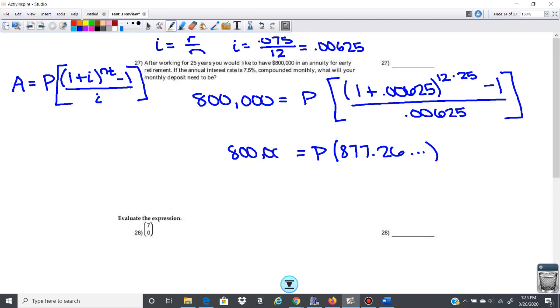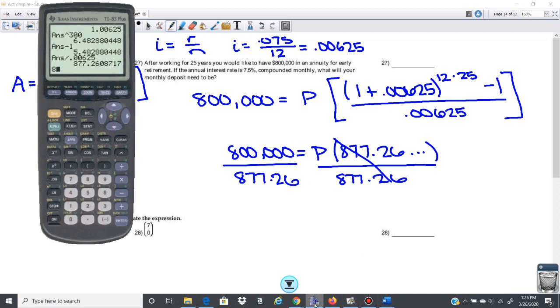So if I want to solve for P, that's going to be the amount I need to deposit every month. I'm going to divide by this number here. So we're going to go here, 800,000 divided by.